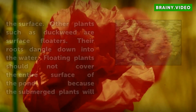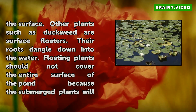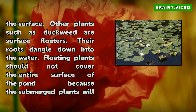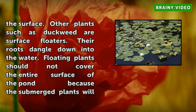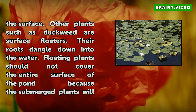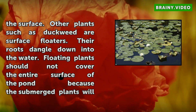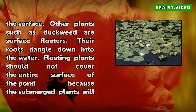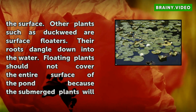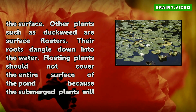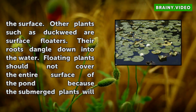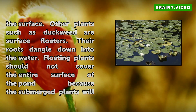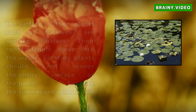Floating plants should not cover the entire surface of the pond because the submerged plants will be unable to live. Fully submerged plants such as starwort and pondweed provide oxygen to the pond, so they are essential to the health of fish.